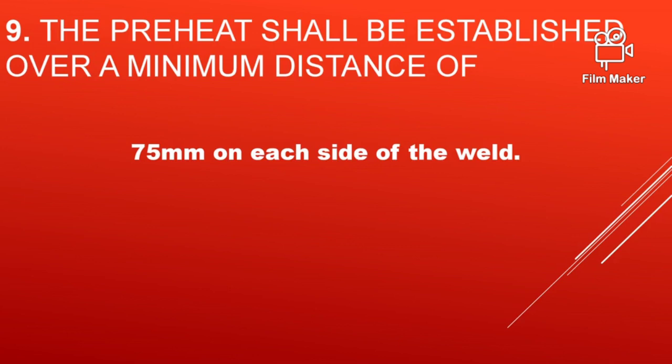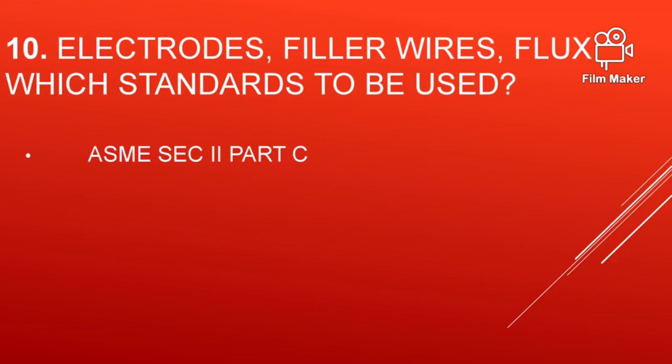The pre-heat shall be established over a minimum distance of how much? That is 75 mm. We have to pre-heat 75 mm width on both sides of the weld.